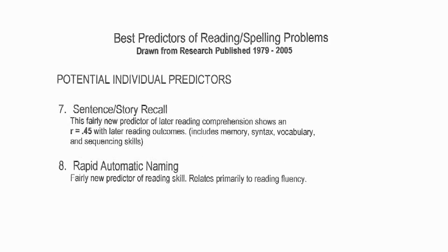The ability to retell and recall stories or songs is also important. Memory is a very important characteristic that supports learning to read and spell in school. Finally, the rate at which children are able to name things — speed of recall — is another very important characteristic that predicts the likelihood a child will have difficulty acquiring literacy.